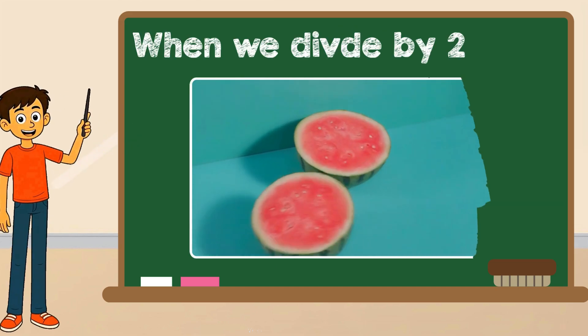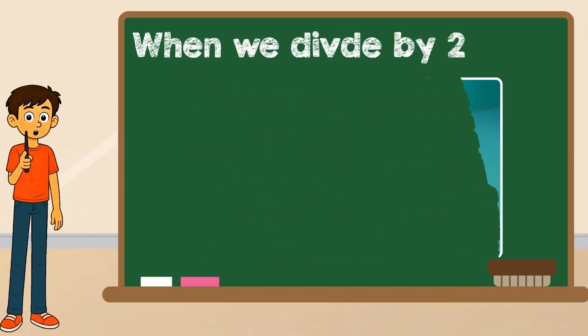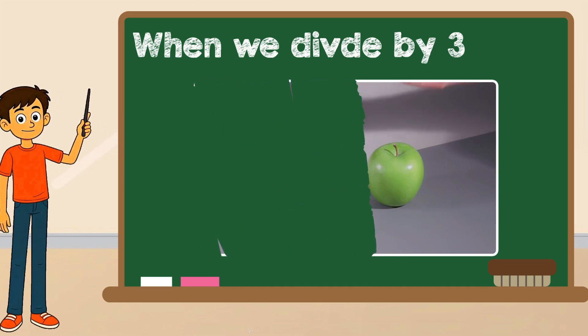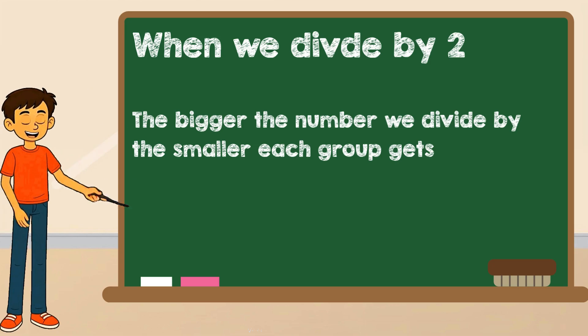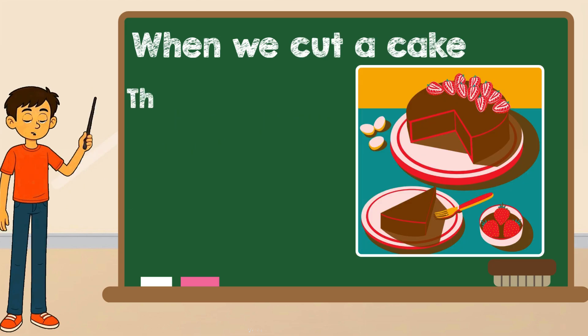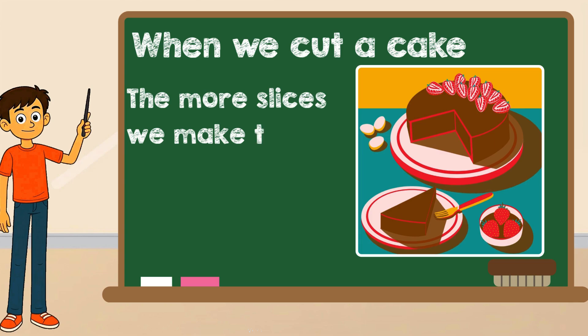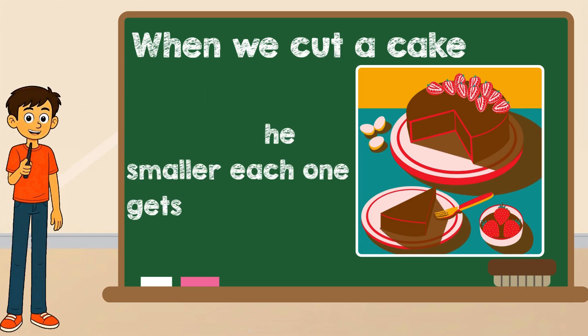When we divide by two, we split things in half. When we divide by three, we make three equal groups. And the bigger the number we divide by, the smaller each group gets. It's like cutting a cake. The more slices you make, the smaller each one is.